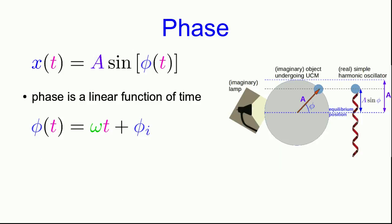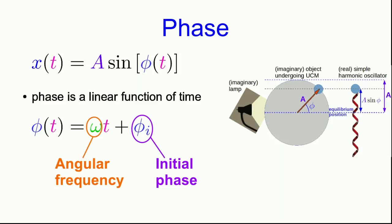Our phi of t is a linear function of t, where phi_i is the initial phase — the value of the phase at time t equals zero. The funny-looking W-like letter, which is the Greek letter omega, is what we call the angular frequency. It's just the rate of change of the phase.